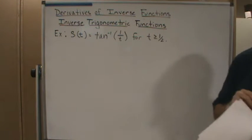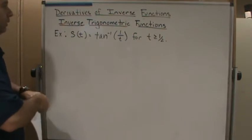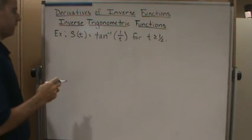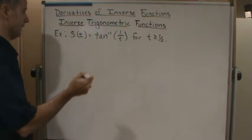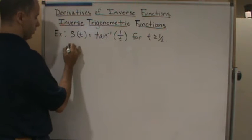So we want to find the velocity at t equals 1. First, we need to find the velocity function, which is the derivative of the position function.